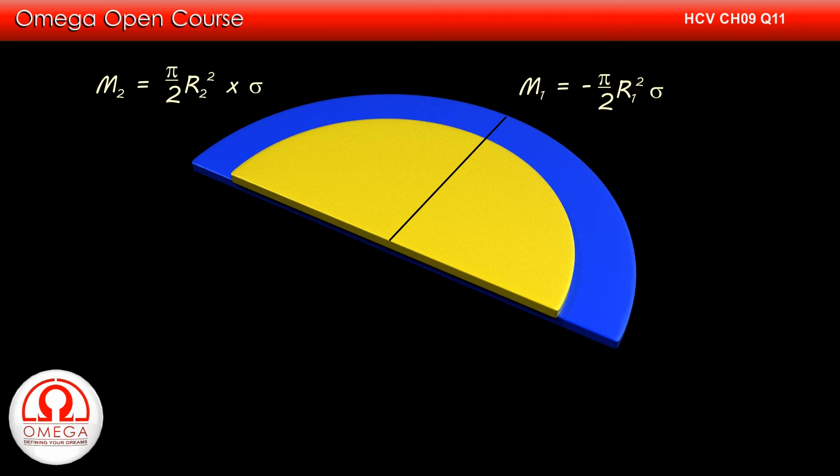The distance of center of mass of semicircular disk from its center is given by 4R/3π.